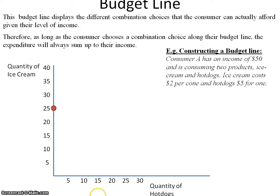In the case of hot dogs, the price is $5. With an income of $50, if we invest all of our income in hot dogs we get 10 units. Having these two plotted points allows us to draw a line connecting them, and it is this line that we call our budget line.